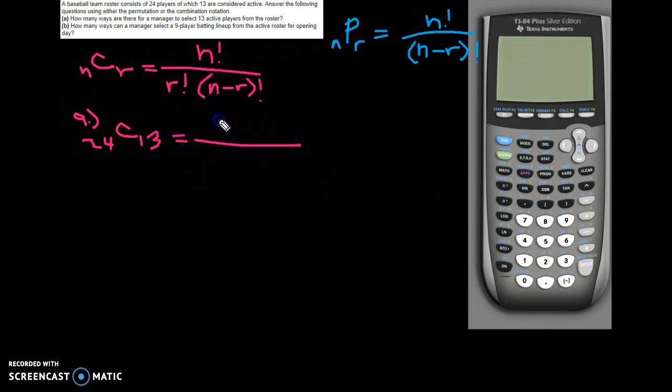So it looks like we are doing 24 choose 13. So N on the top, so on the top is 24 factorial. And on the bottom is 13 factorial. And then this is N minus R, so 24 minus 13 is 11 factorial. And so those two numbers are multiplied by each other.